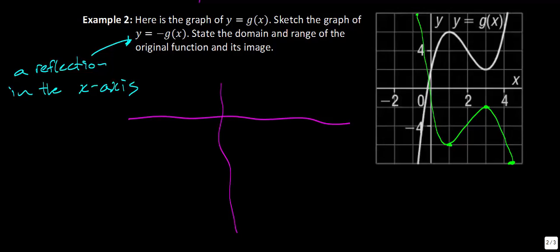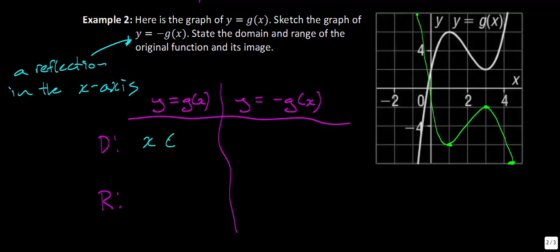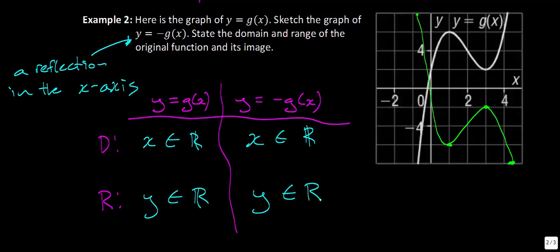Now let's figure out the domain and range. The original function is y equals g of x, and the new function is y equals negative g of x — a reflection in the x-axis. For the domain: this graph goes infinitely to the left and to the right for both functions, so x can be anything for both. For the range: the graph goes infinitely high and infinitely low, so the range can also be anything for both functions.